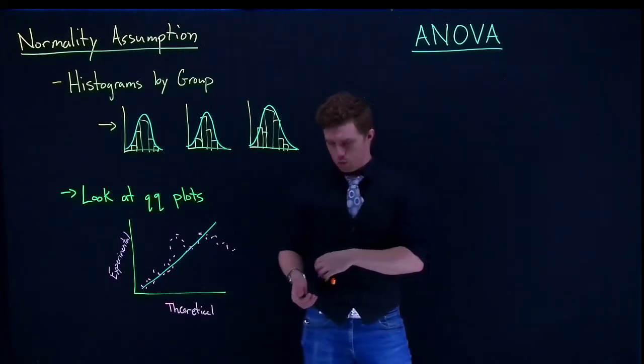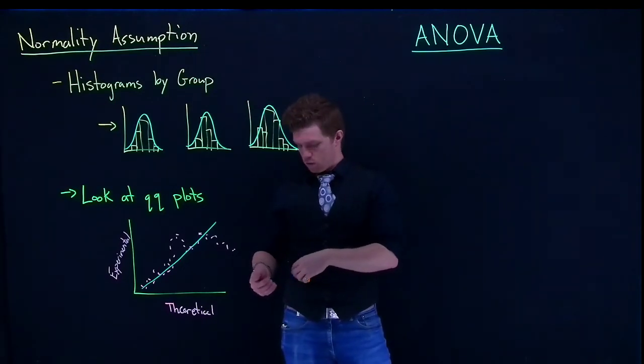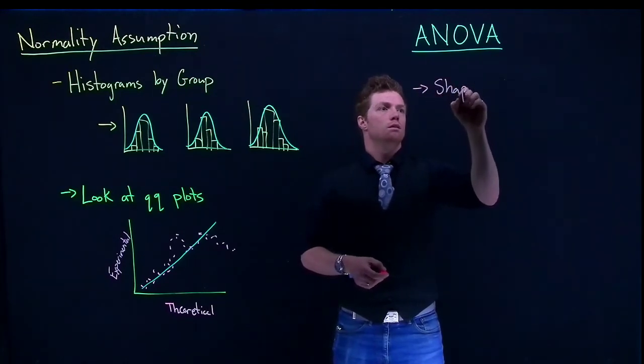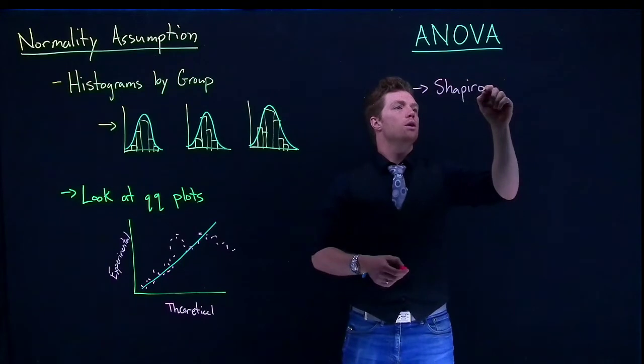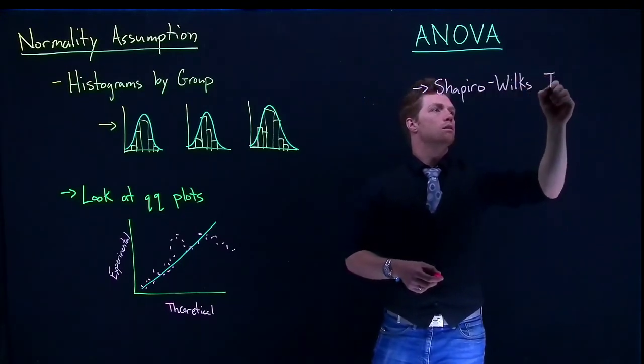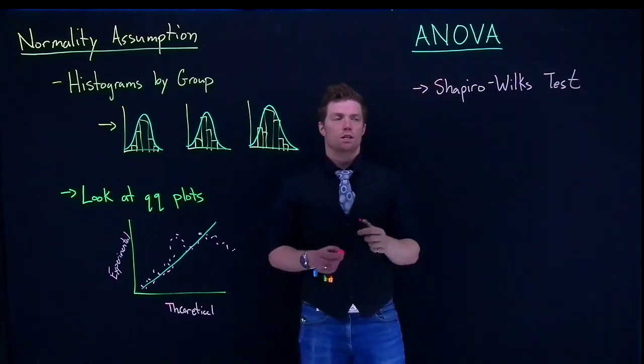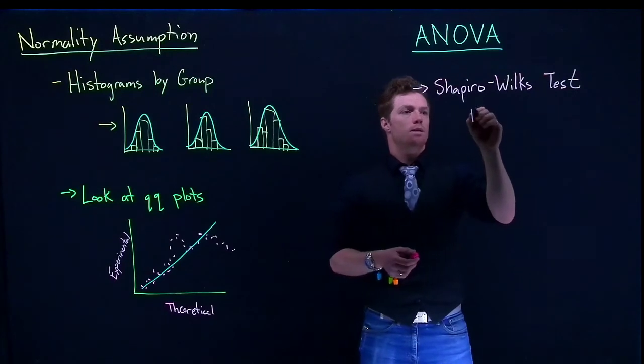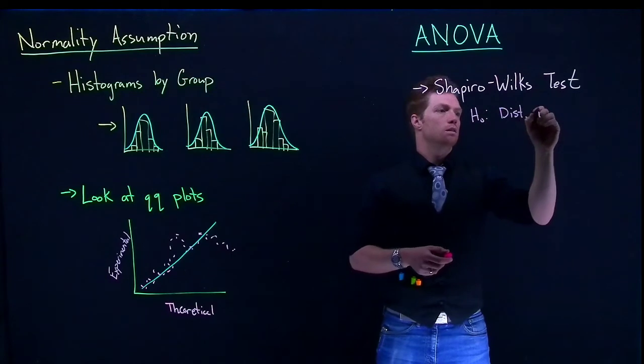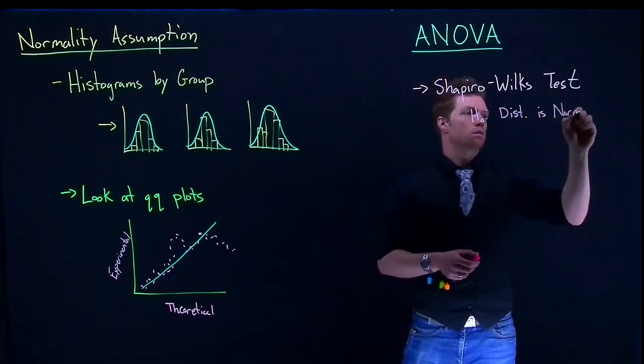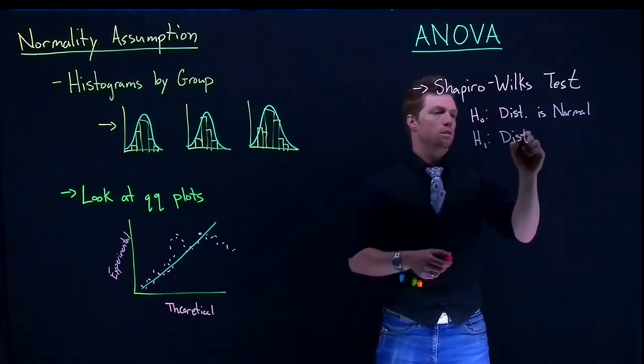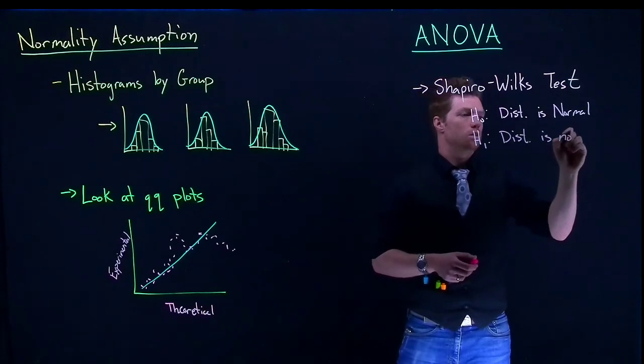The last one that we can do, is we can look at what's called the Shapiro-Wilkes test. Now this is a really interesting little test. So what it does, is it basically sets up the null hypothesis that says that the distribution is normal, and the alternative hypothesis that the distribution is not normal.